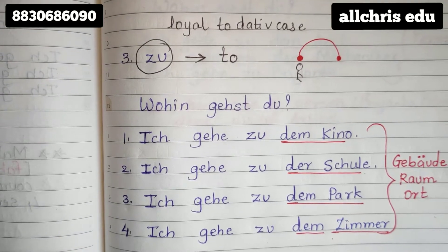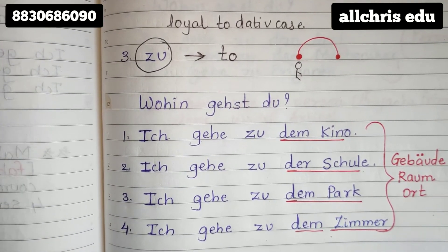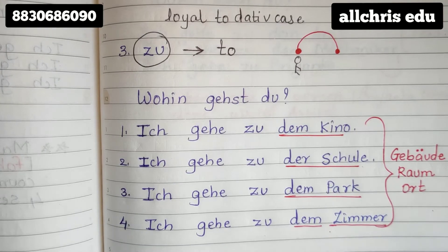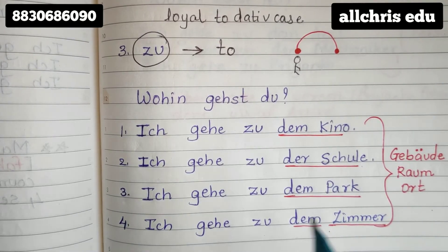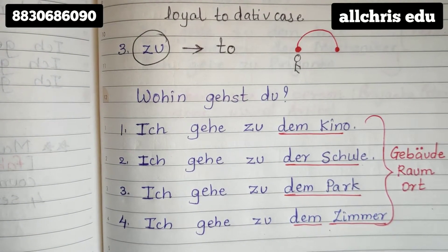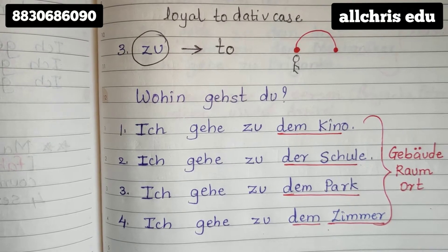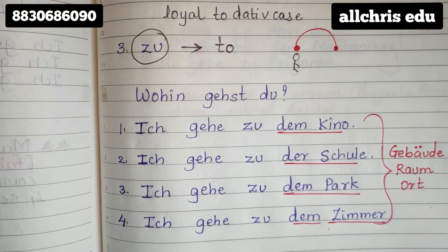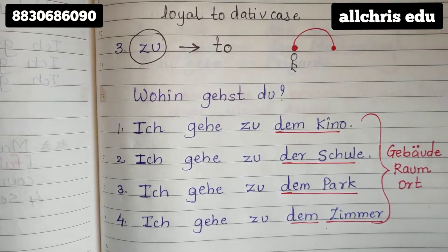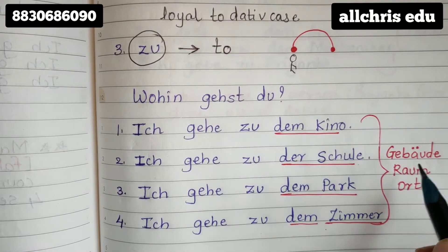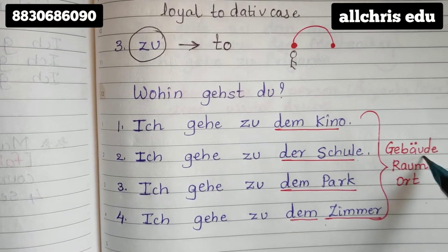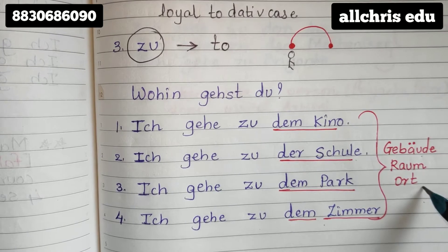Hi there students. The third form we are going to see is 'zu'. Here also you are going from one place to another, but here it is not a country and it is not a city. Here you are going to some place which is Gebäude, Raum, or Ort.